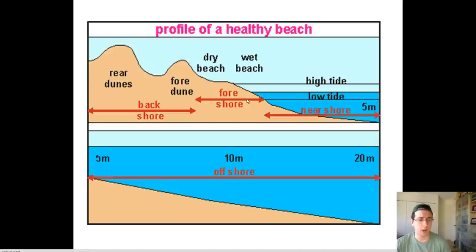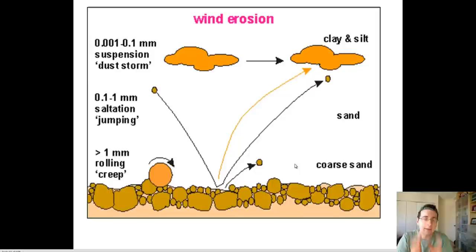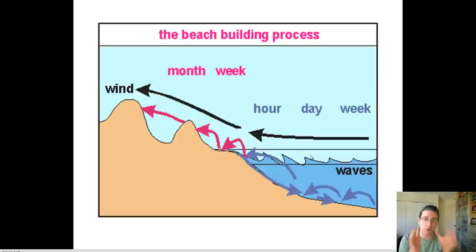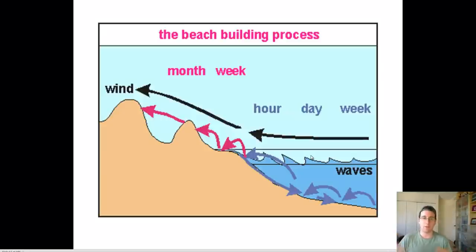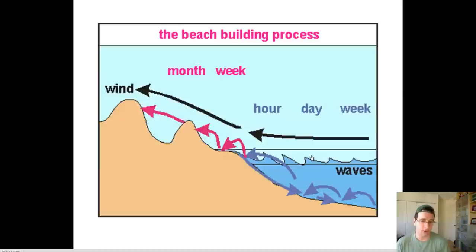Once the sand is sitting at the beach, wind picks it up and throws it backwards to form the dry beach — the area never touched by waves. That creates the fore dune and the back dune, depending on how much wind is present, completing the formation of the backshore. Waves can build the beach in hours to weeks, while the backshore takes months to build. On the next video, we'll talk about how this process reverses to cause beach erosion, concluding our beach cycle videos.